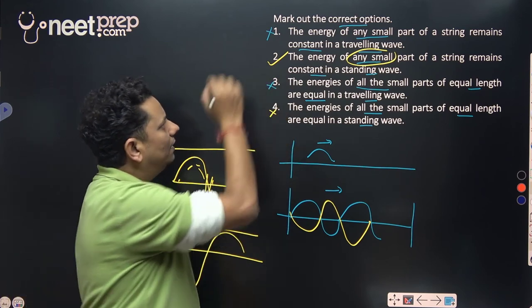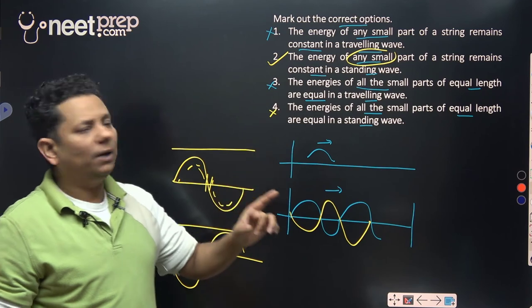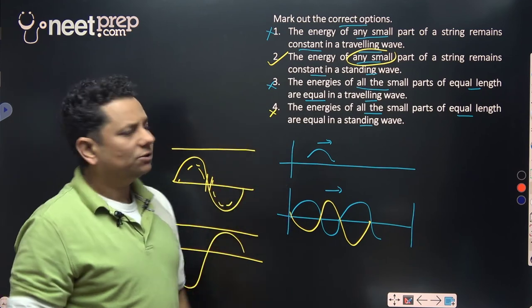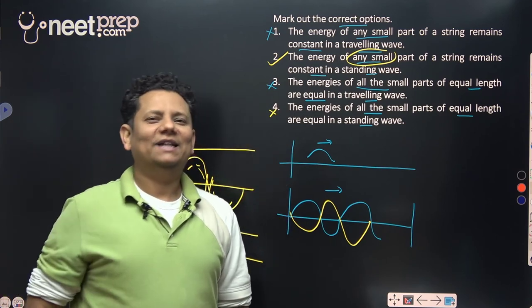So option 2, which states that the energy of any small part of a string remains constant in a standing wave, this will be the right answer.